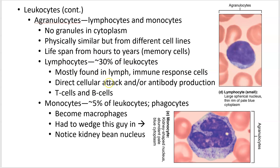Lymphocytes are concentrated in lymph — fluid that leaks out of blood vessels and filters through tissues. They're critical for developing immunity, not just defense but an immune response where you become immune to things you've already experienced. For example, I had chickenpox as a kid and have been exposed since without getting sick because I'm immune. They can do direct cellular attack or, in the case of B cells, produce antibodies.